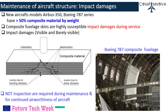Regarding maintenance of aircraft structure: to reduce the weight of the aircraft and improve fuel efficiency, new aircraft models such as the Airbus 350 and Boeing 787 series have greater than 50 percent of composite material by weight. Composite fuselage skins are highly susceptible to impact damages during service due to foreign object impacts. Impact damages can be visible or barely visible — the subsurface damage is much larger than the surface damage, and hence NDT inspections are required during maintenance for continued airworthiness of the aircraft.